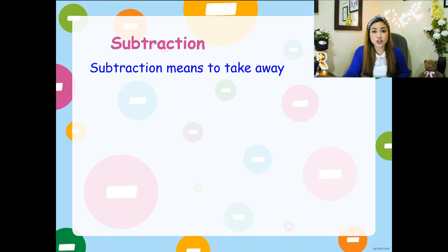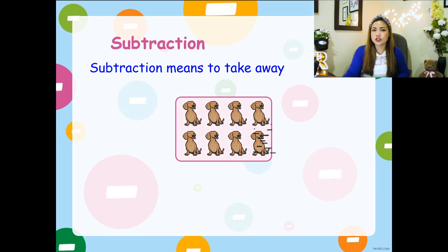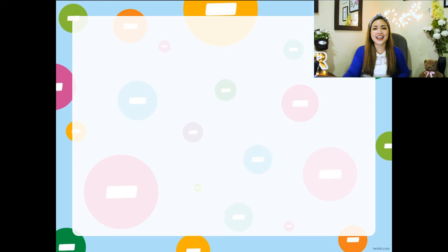Subtraction means you have to take away. For example, I've got eight dogs in here. I have given away two of them to my friends — I took away two from eight. Let's write the subtraction sentence. Eight, which is my subtrahend — remember, the big number — and then you take away, minus is the symbol in subtraction. You take away two and the answer is six.